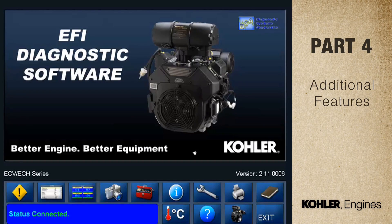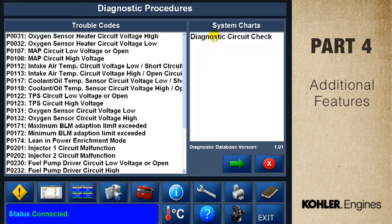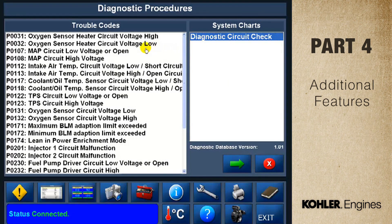The next function on the main control panel is the special test button. The special test menu displays the available tests or procedures. Here we see options for our example engine, the ECH ECV 630-749. The first option, Diagnostic Procedures, gives you an easy way to look up trouble code information or run the guided diagnostic procedures. This screen lets you select either the circuit check or a specific trouble code from the list. Select a code and click the green arrow, or double click on the code.